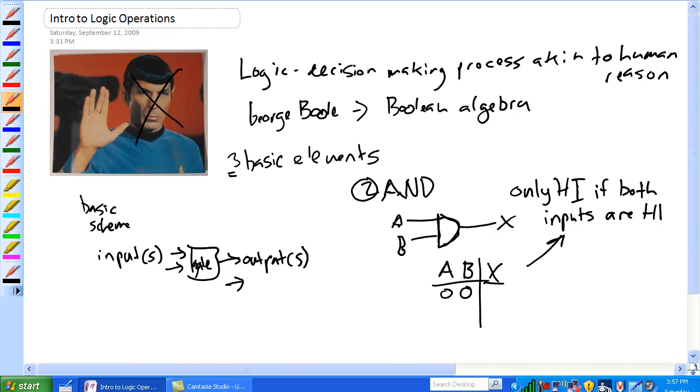Well, read up here, only high if both inputs are high. So neither of the inputs are high, so it's also a zero. So zero, one, A is coming in as a low, B is coming in as a high. Again, only high if both inputs are high, so that's a zero.